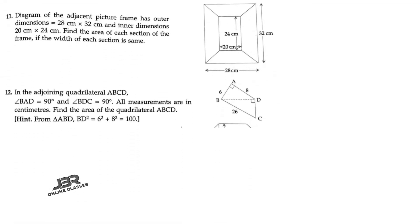Now sum number 11. The adjacent picture frame has outer dimensions 28 × 32 centimeters and inner dimensions 20 × 24 centimeters. If you join a perpendicular line, you can consider each corner section as a trapezium. There are four trapeziums in total. Since the total width is 28 and the inner is 20, the height of each trapezium equals 4 on each side.